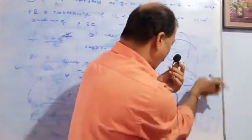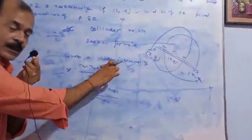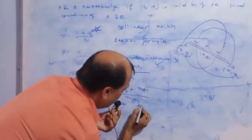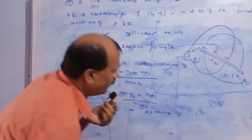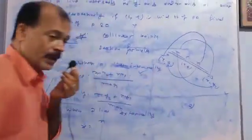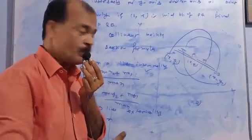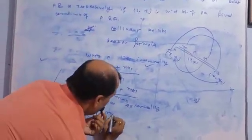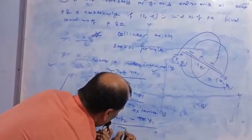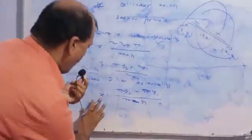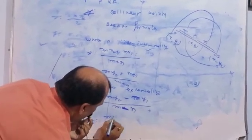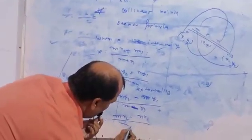When P lies out of A and B, that is called external division. I will give the detail in the next video. There is a difference: for external division, x equals Mx2 minus Nx1 divided by M minus N, and for the y coordinate: y equals My2 minus Ny1 divided by M minus N.